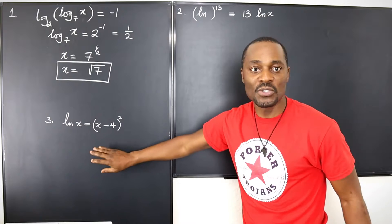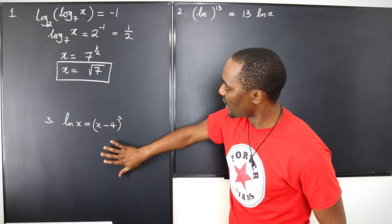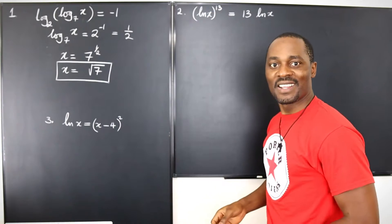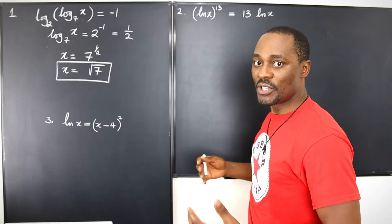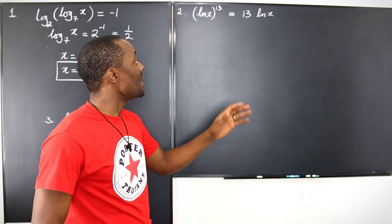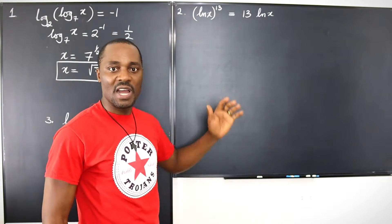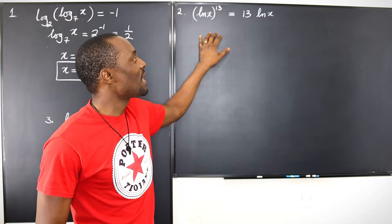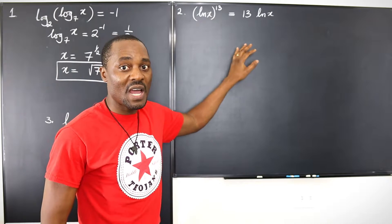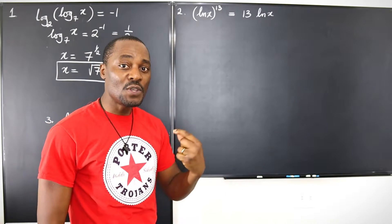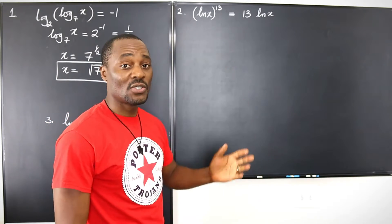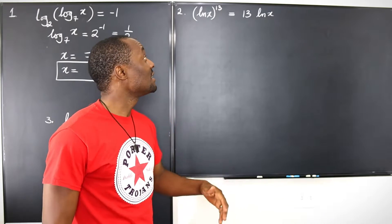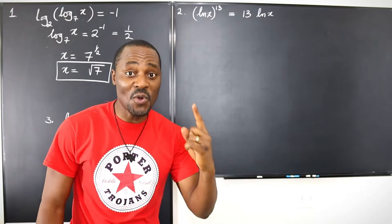Let's go to number 2. So you have ln(x) here and ln(x) here. For some students, the first thing they want to do is divide both sides by ln(x) — at least it gets rid of ln(x) on one side. You don't want to do that, because if you do, you end up getting fewer answers. This question actually has three answers. If you do that, you've gotten rid of one already and you might end up getting just one answer instead of three — so you're getting 33% of your grade.